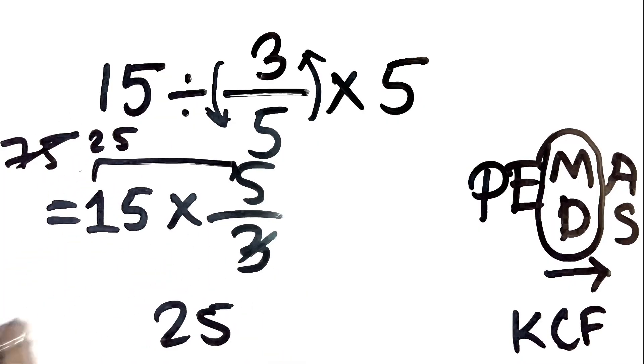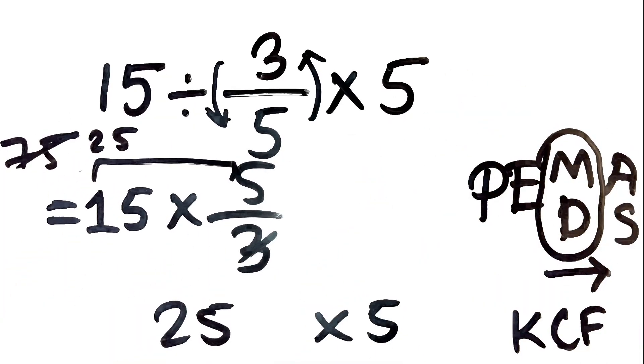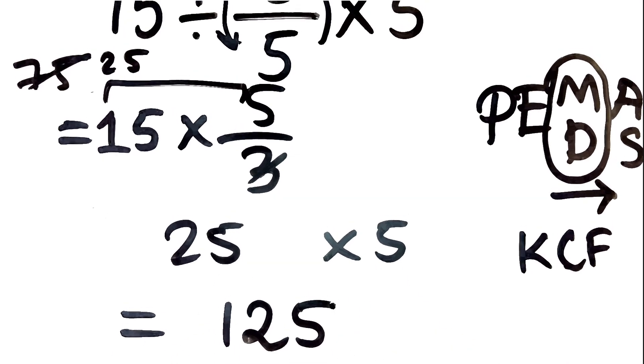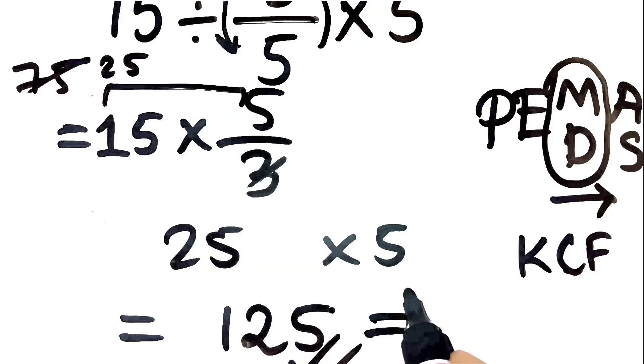Step 2, now multiply by the last 5. So 25 times 5 equals 125. So the correct answer is 125, not 5.